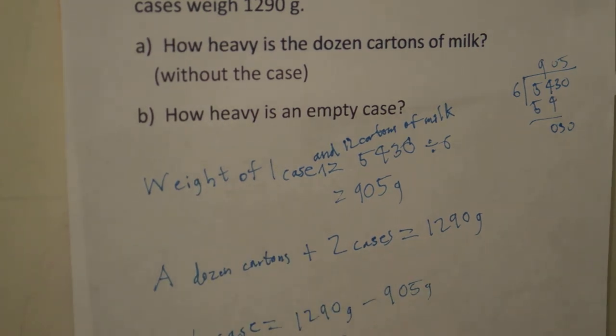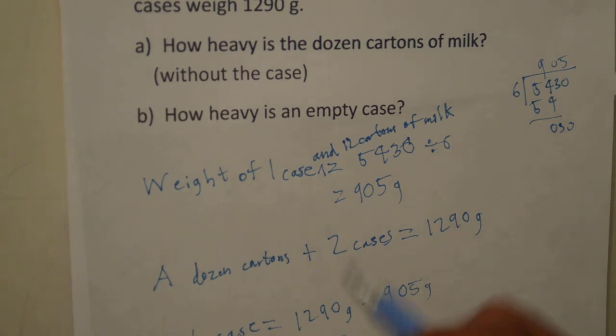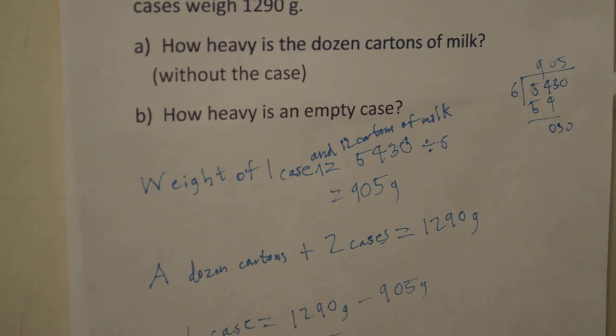That is the answer to part B. But the answer to part A is how heavy are the dozen cartons of milk. And all that is, is the weight of the case and 12 cartons of milk, 905 grams.